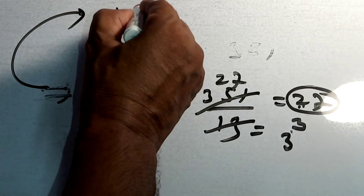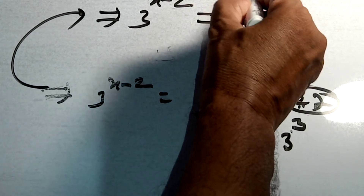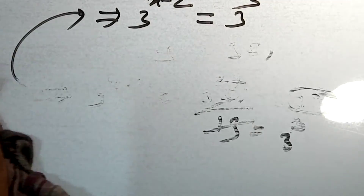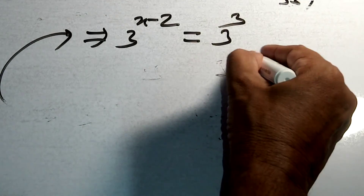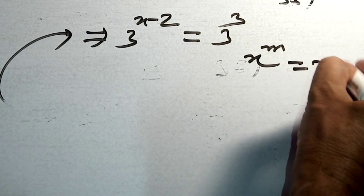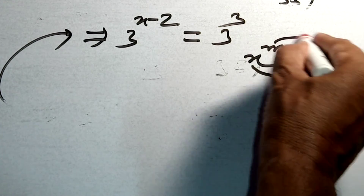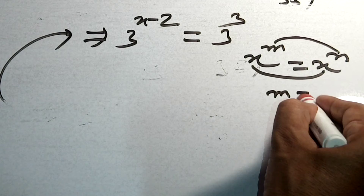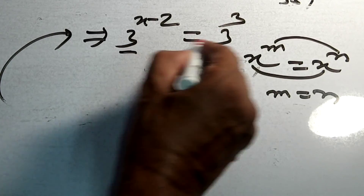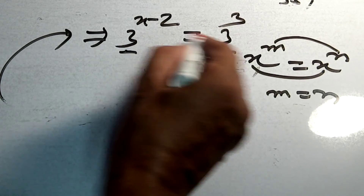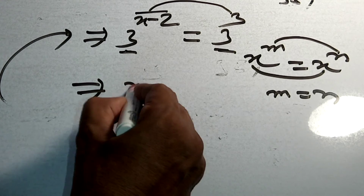So we have found that 3 to the power x minus 2 equals 3 to the power 3. As per the rule of indices: if x to the power m equals x to the power n, and the base of both is the same, then the powers must also be equal — that is, m equals n.